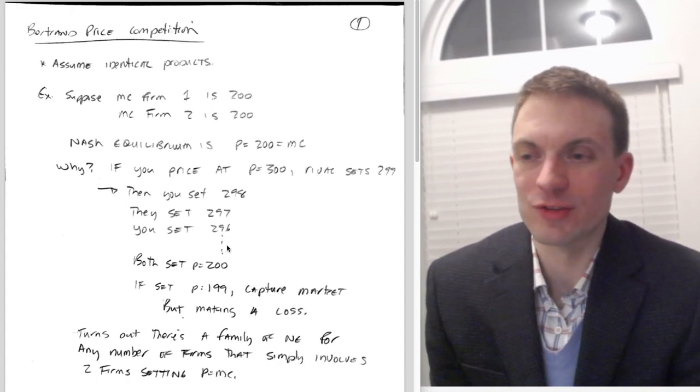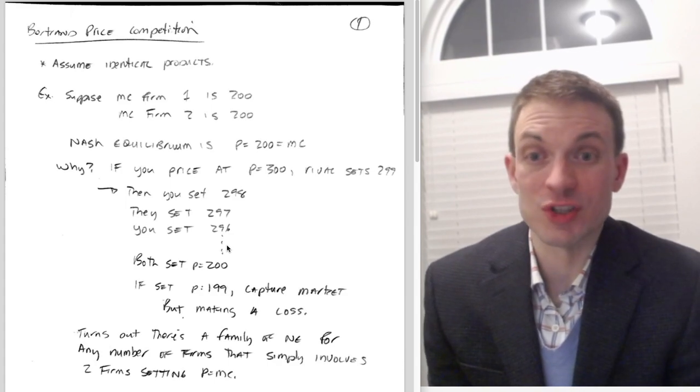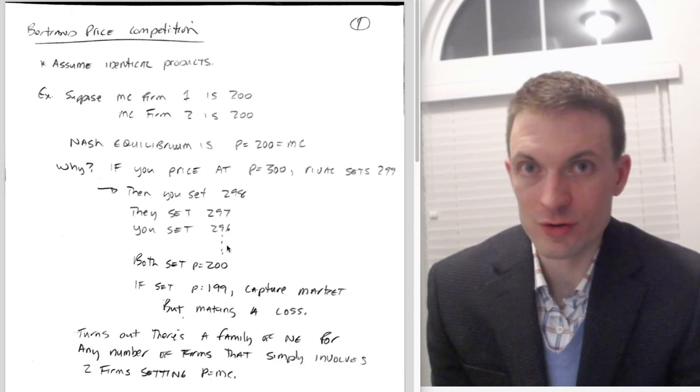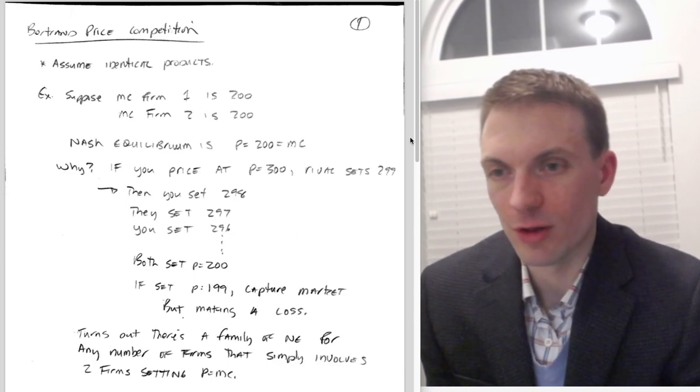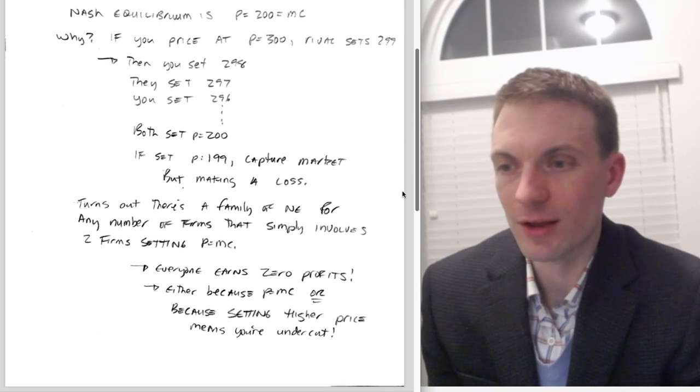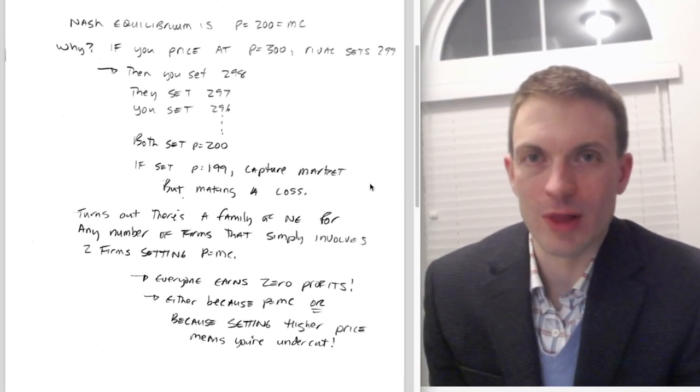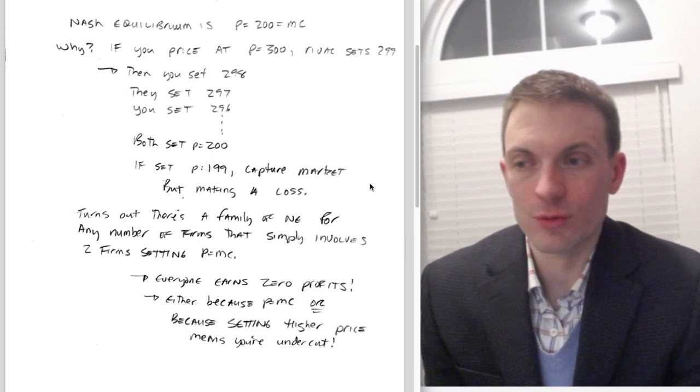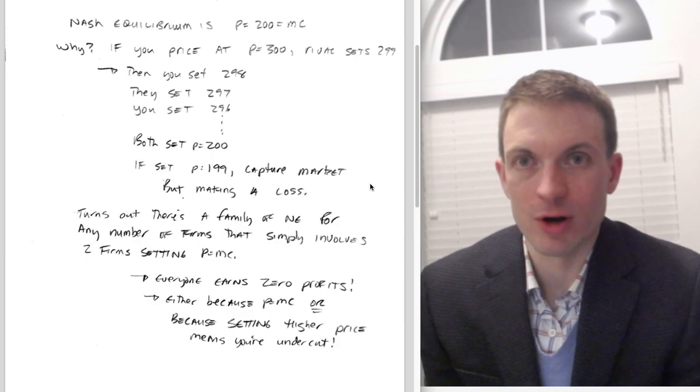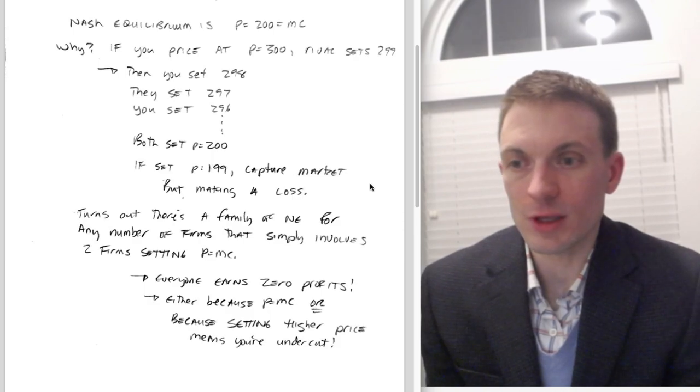When does this undercutting behavior stop? Well, when you hit price equal to marginal cost. Of course, somebody could set price equal to 199, but you both have costs of 200. That means that though you're gonna capture the entire market, you would be making a loss, and so that wouldn't be a good idea. So it actually turns out by this logic, we're gonna get Bertrand equilibrium where you're setting price equal to marginal cost.